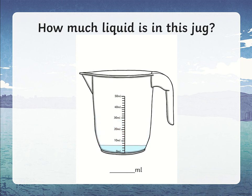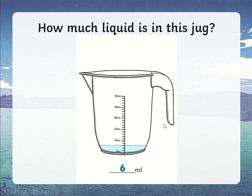Let's have a look at this one. It goes: zero, ten, twenty, thirty, forty, fifty — so it goes up by tens. Counting the small increments: one, two, three, four, five. Obviously the total between marks is ten, not five, so each small line does not represent one milliliter — we have to double it. So each line goes up by twos: two, four, six, eight, ten. Counting up to the water line, it is six milliliters.